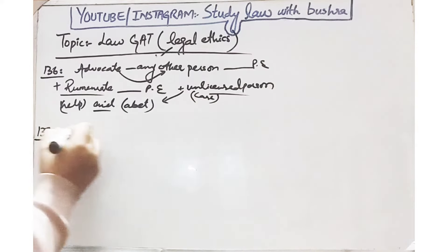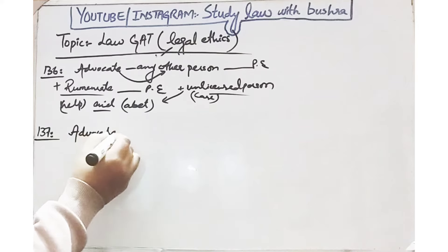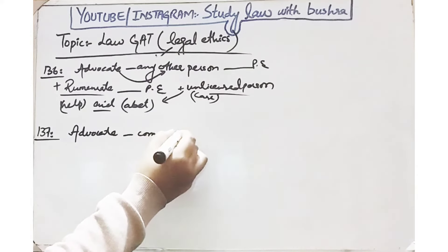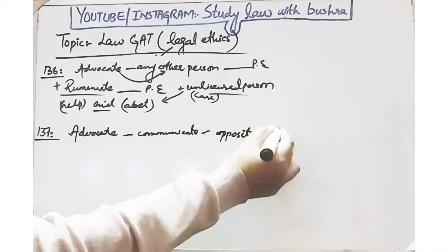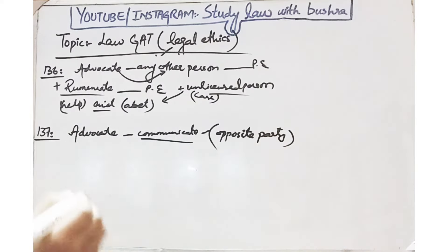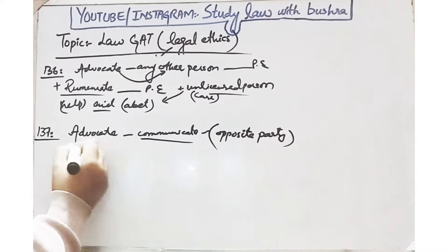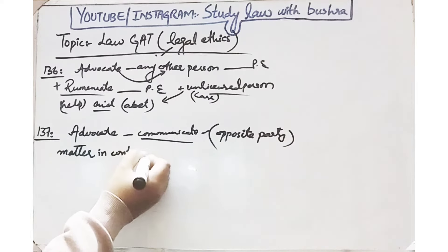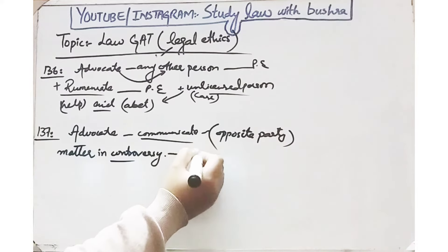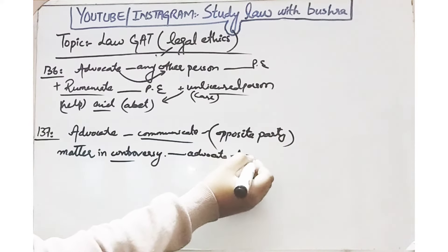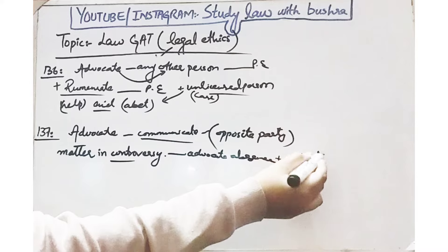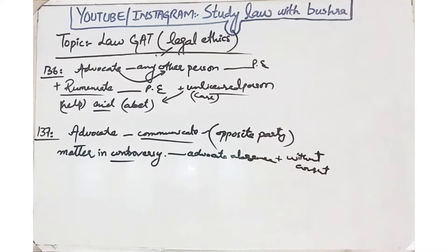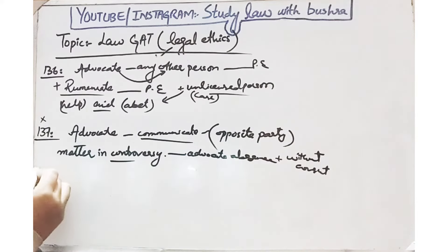Rule 137 kehta hai: an advocate shall not communicate about a subject of controversy with a party represented by an advocate. Agar do parties ka case chal raha hai, to ek party ka advocate doosri opposing party ke saath kisi bhi kisam ki communication nahi kar sakta regarding the matters in controversy — doosre advocate ki absencc mein, aur na hi uske consent ke baghair uski party se koi baat kar sakte hain.